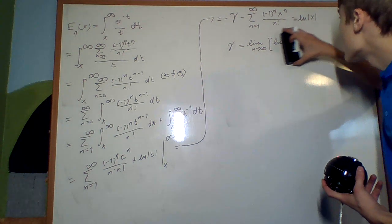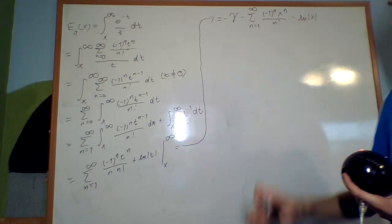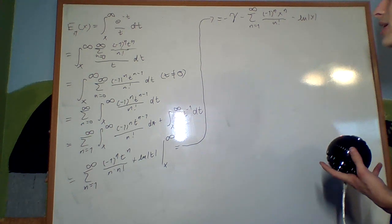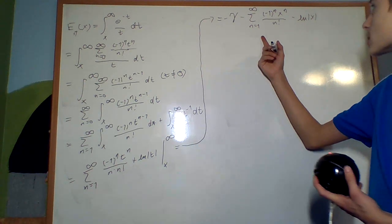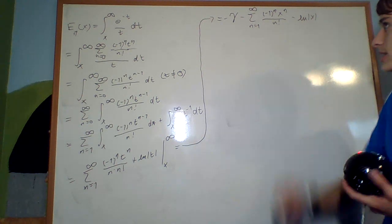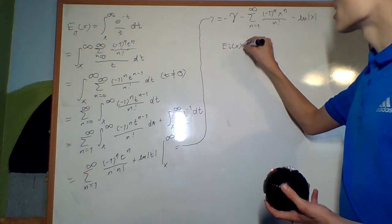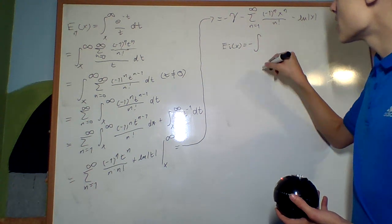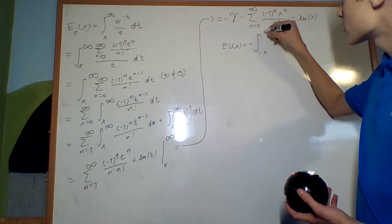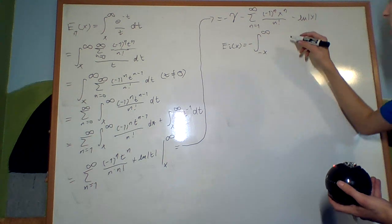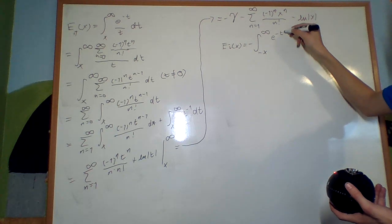That's a very specific constant; I won't go into how to derive it here. Now we can look at a different function which is a lot more common — it gets rid of all the nastiness in the first one. It's going to be Ei of x, defined as the negative integral from negative x to infinity of e to the negative t over t dt.